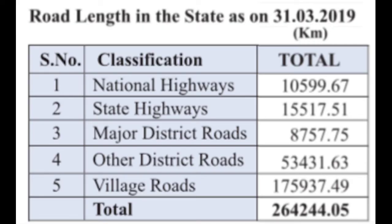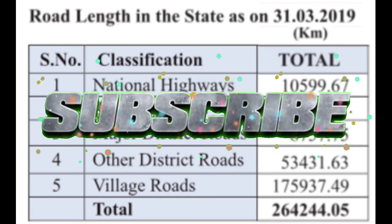In India, the total length of roads is: National Highway 10,599 km, State Highway 15,517 km, Major District Roads 8,757 km, Other District Roads 53,431 km, and Village Roads 1,757 km, giving a total length of 264,344 kilometers.